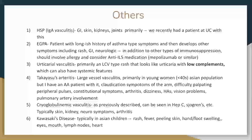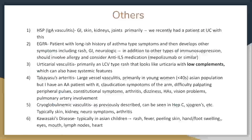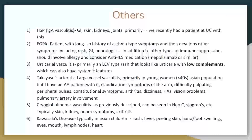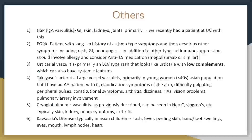eGPA — also known as Churg-Strauss — the biopsy is not as perfect for it as the other two ANCA vasculitides, but it can still be helpful if you catch that rash, GI, and neurologic issues. One important medication class used is biologics — allergists use something similar. You can involve allergy if you diagnose eGPA — rheumatology and allergy would be happy to take that patient.